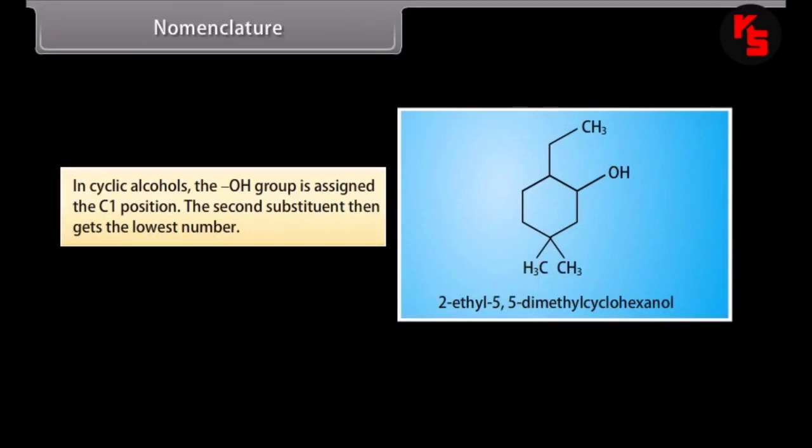The second substituent then gets the lowest number. For example, 2-ethyl-5,5-dimethylcyclohexanol.